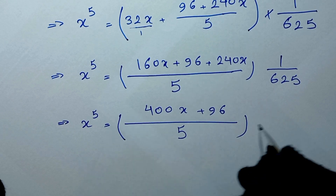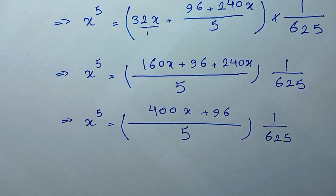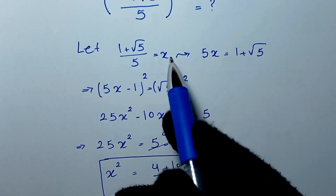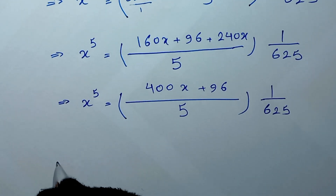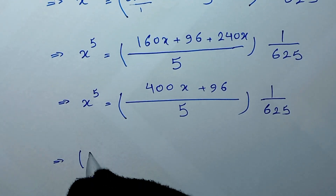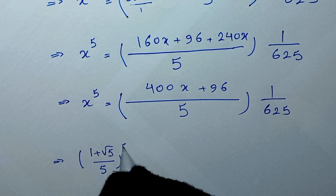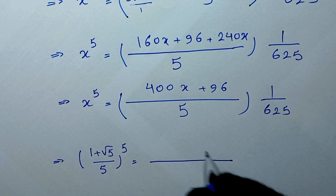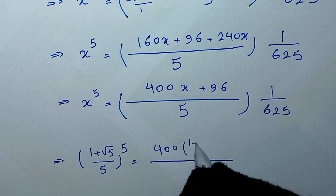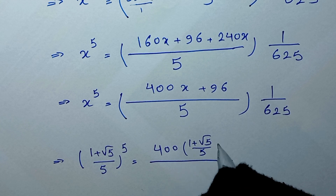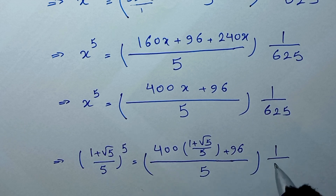In the next step, we recall that x is equal to 1 plus square root of 5 over 5. So we substitute back: 1 plus square root of 5 over 5, to the power of 5, equals 400 times (1 plus square root of 5 over 5) plus 96, all over 625.